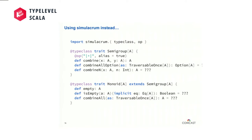We have this @op annotation — if you annotate a method with @op, |+|, it will additionally generate an operator alias for that in the infix notation. If you said alias equals false, you wouldn't get a combine infix method, you'd only get |+|. It's a bit of a preference: do you want multiple options for infix notation, or do you want to fix people to just use operators?